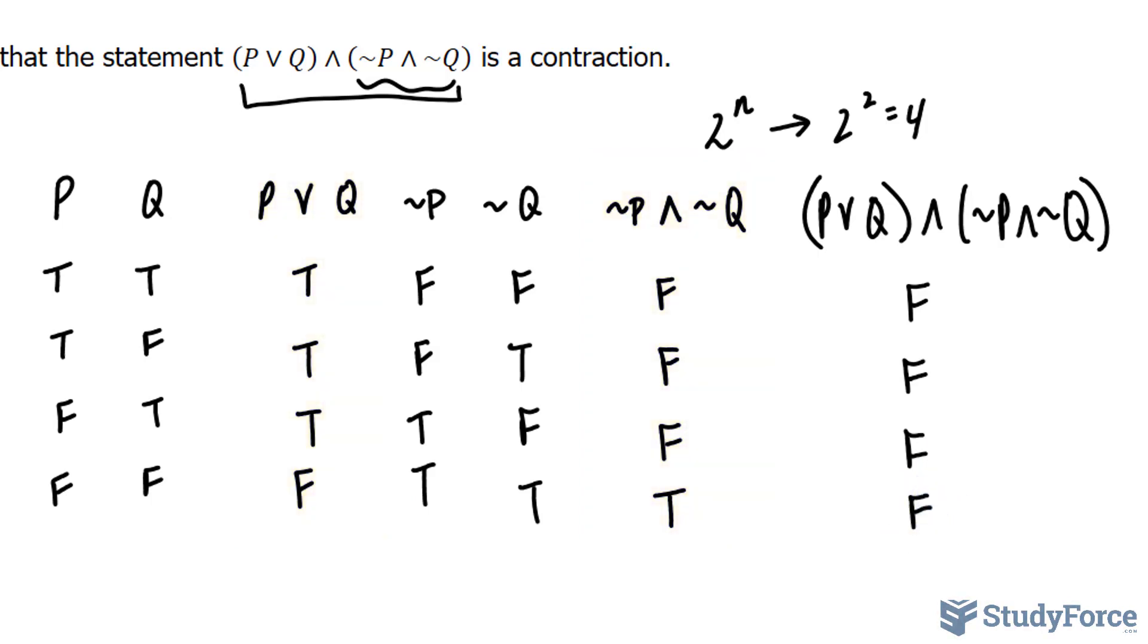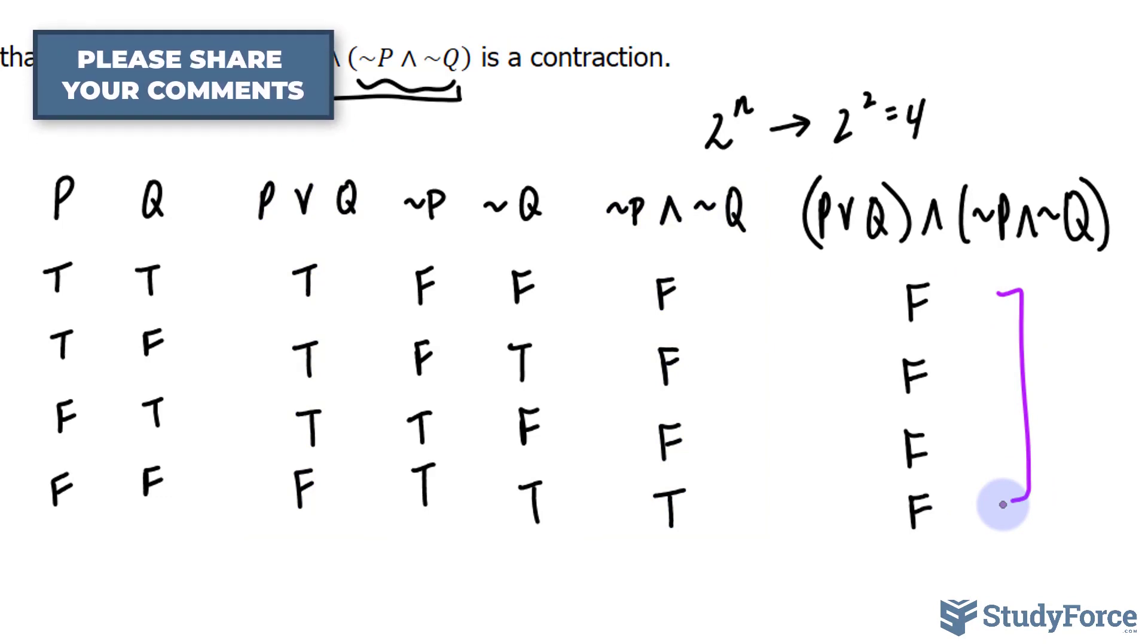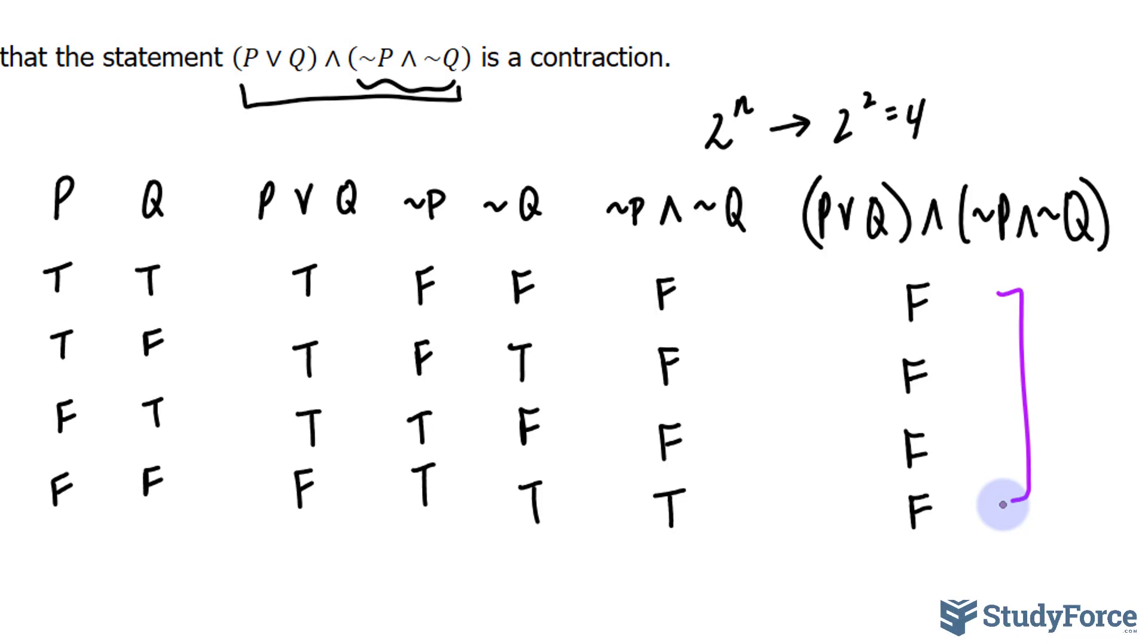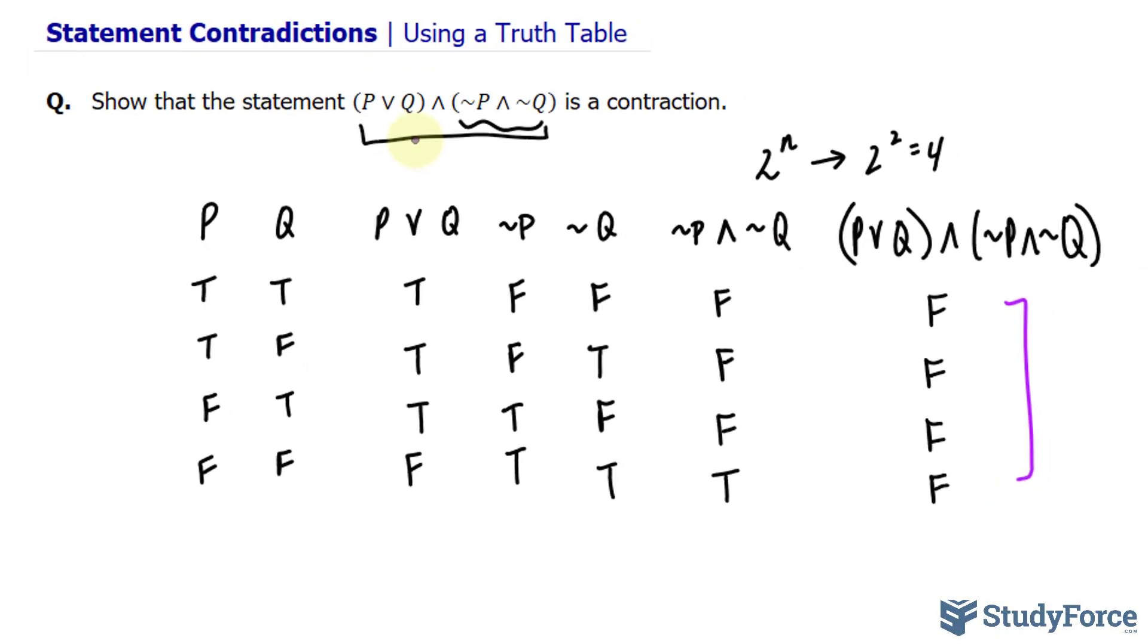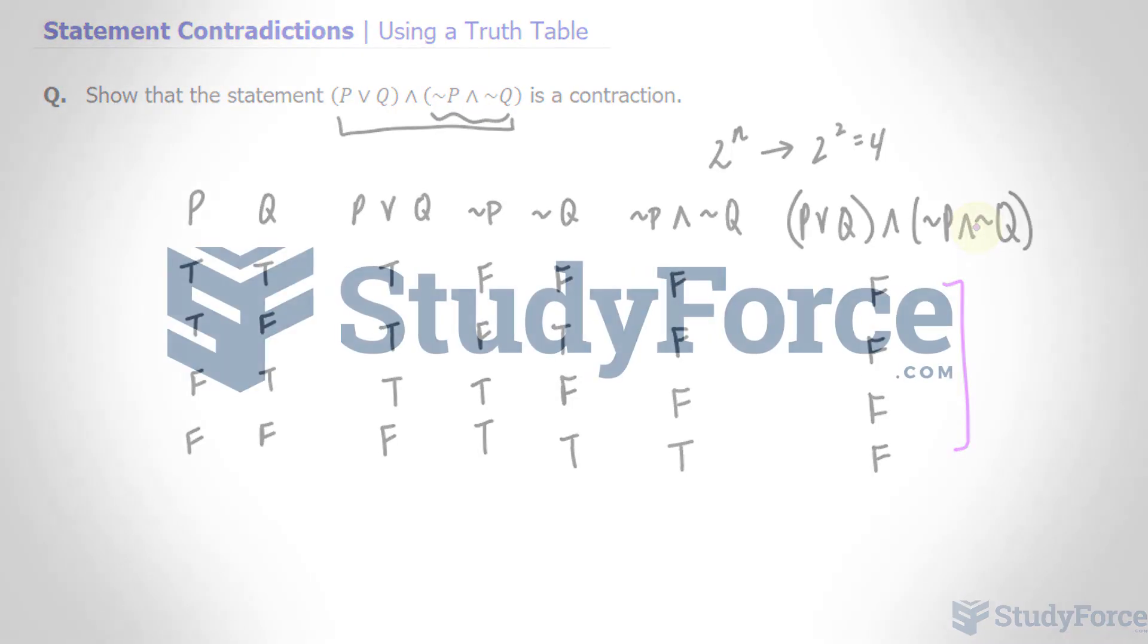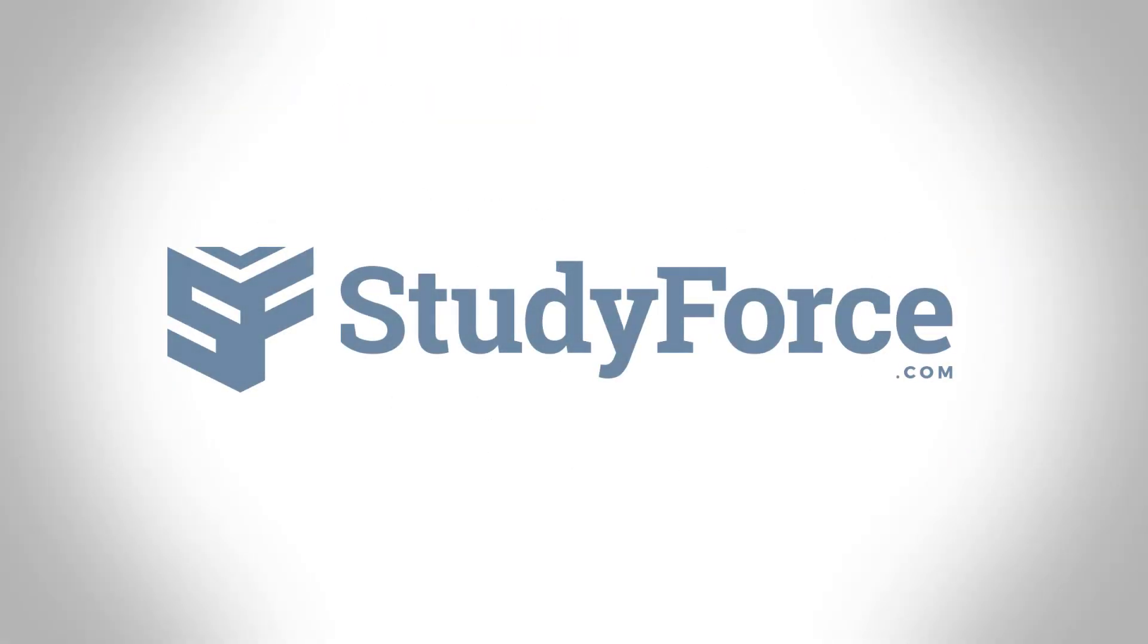Because we have a column full of falses for the statement, that makes the statement a contradiction. Now before I conclude, just so that you understand this perfectly, this statement and this statement can never be true at the same time. This is what this conclusion, our final conclusion, is telling us here. And there you have it. That is how to use a truth table to show a contradiction.